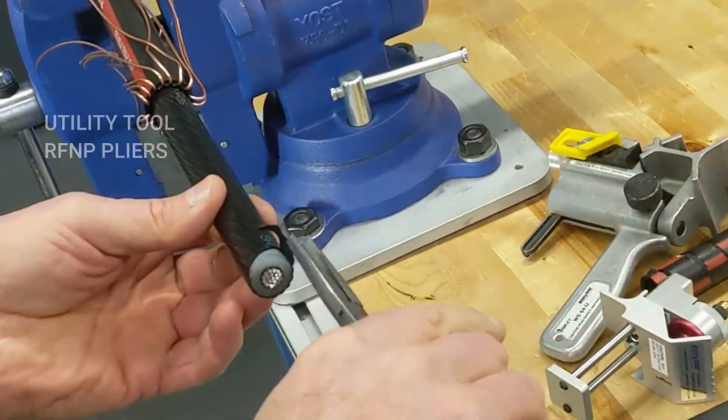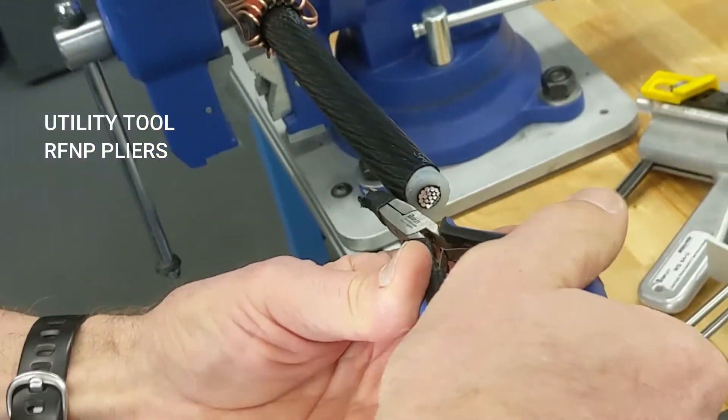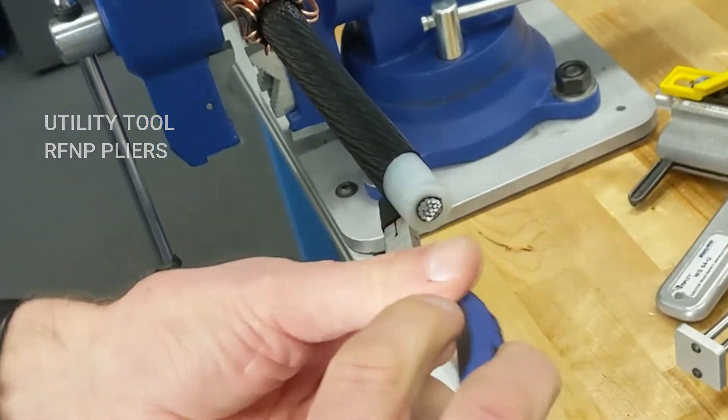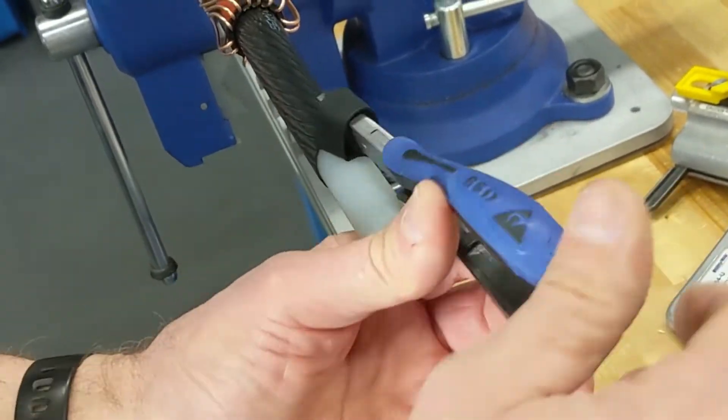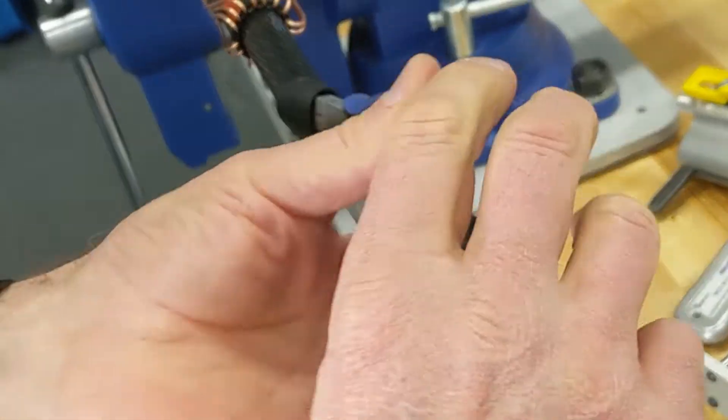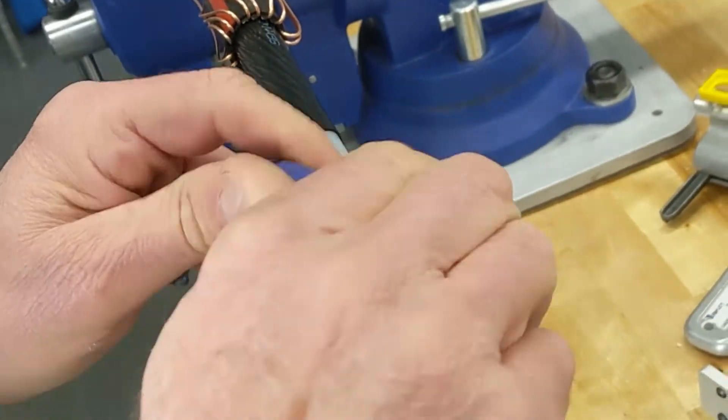You're now ready for the peelable semicon. A good pair of flat nose pliers will do the trick to remove the semicon. If you had the blade depth set to just over the insulation, you'll get a damage-free cut.